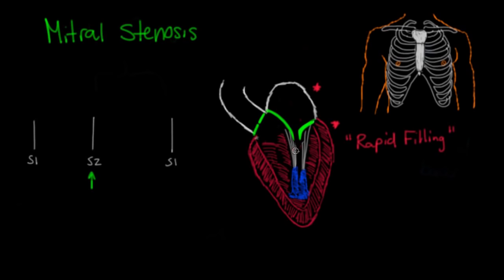Before the murmur, we may hear an extra sound. Right after the aortic valve closes, the mitral valve is going to open. But because this valve is stenotic, the leaflets can only open a little bit — they kind of snap open. This is called an opening snap, similar to an ejection click in systolic murmurs. It's from the stenotic valve leaflets shooting open during the rapid filling phase of diastole. So just milliseconds after S2, you get an opening snap (OS).